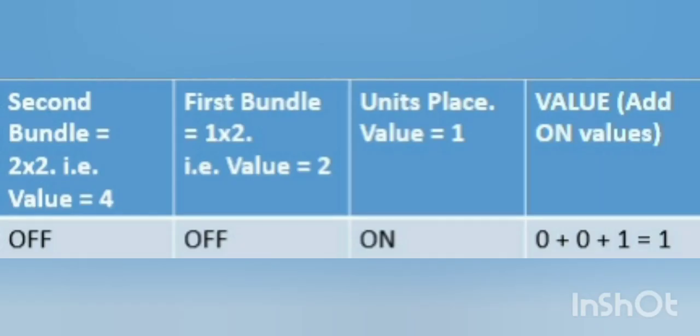For example, in this table, second bundle value is suppose off, which means 0. First bundle value is off, which means 0. And units place is on, which means 1. So what is the number? Just add all the values. 0 plus 0 plus 1, that is 1.